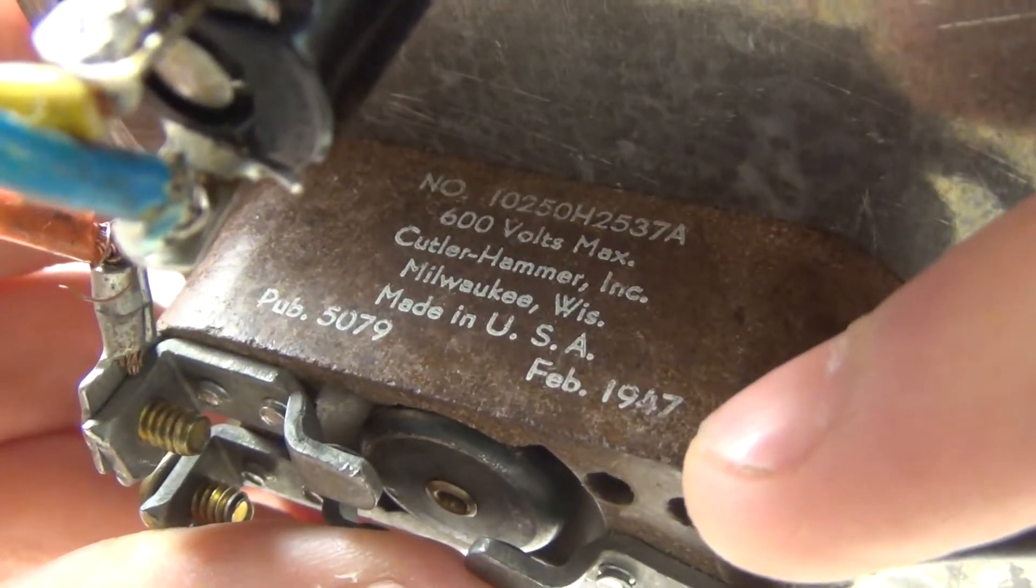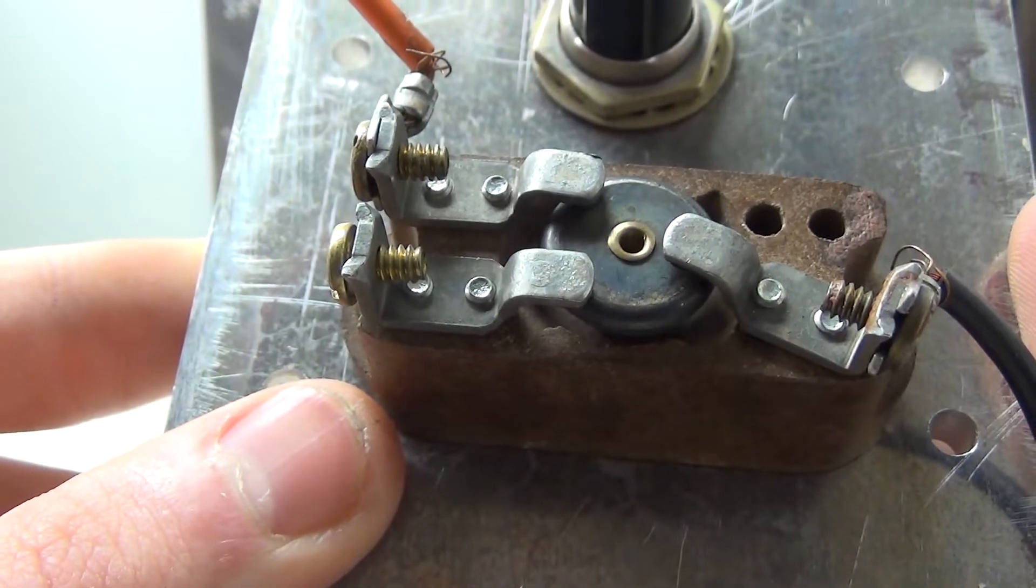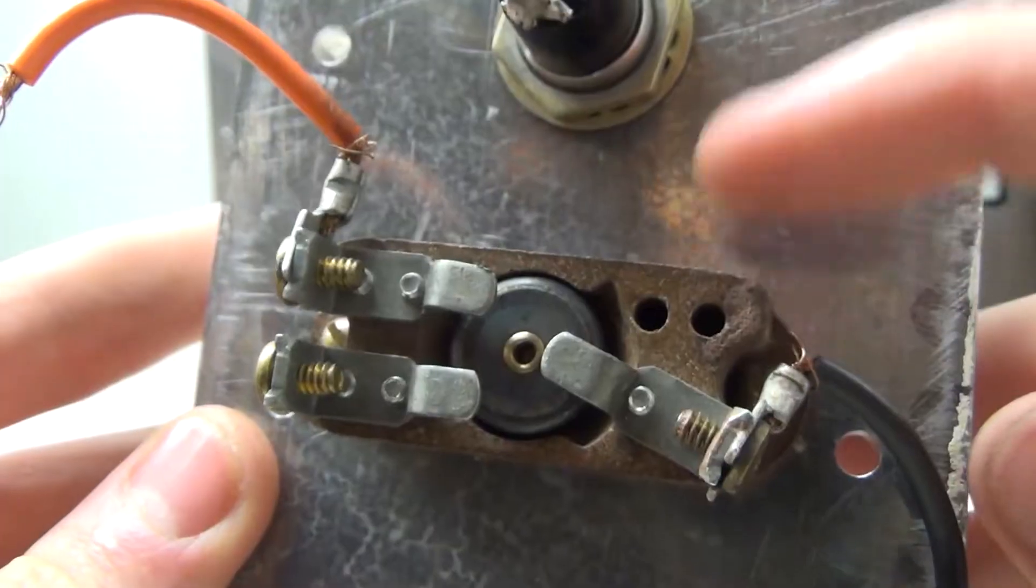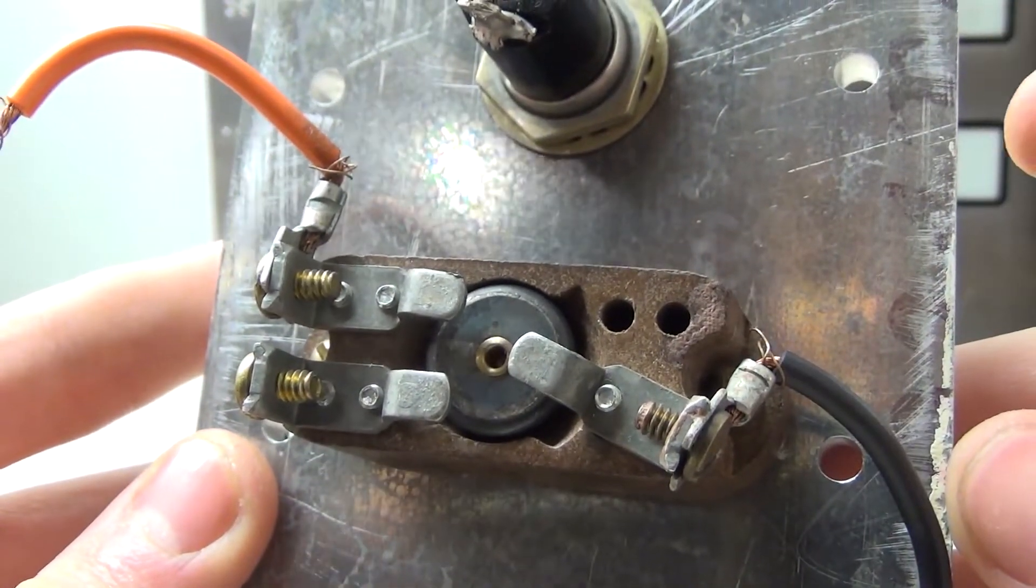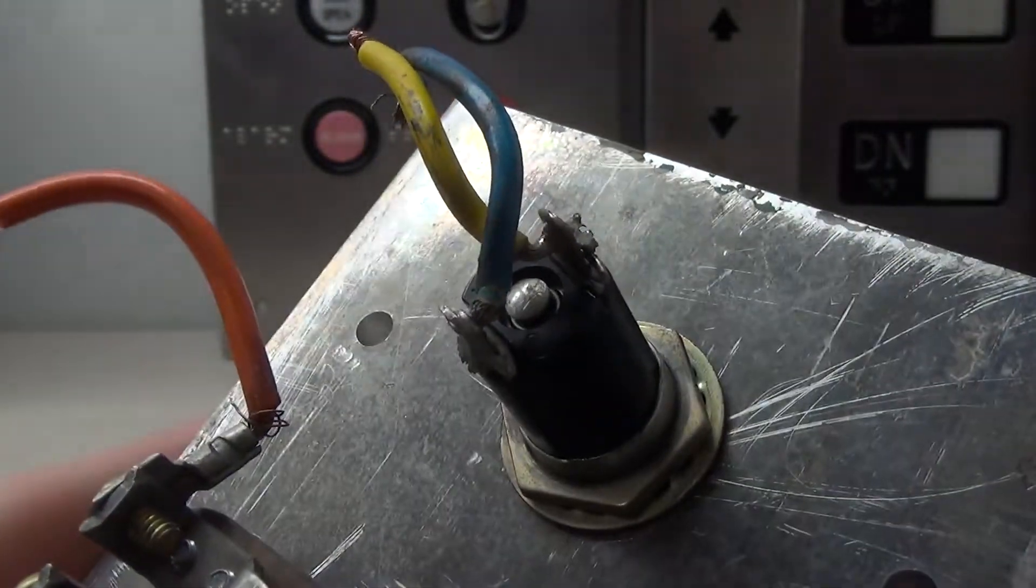This was built in February of 1947, so this is a very old piece. When you press in the button, it simply presses this little disk onto these little pieces of metal which completes the circuit. This whole board is made out of asbestos.